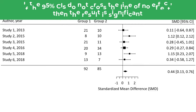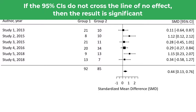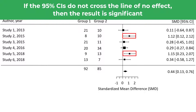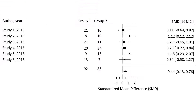However, if the 95% confidence intervals do not cross the line of no effect, as shown in studies 2 and 5, then the results of these individual studies are significant, so the p-value will be less than 0.05. This is also the case for the pooled result, since the diamond does not cross the line. The direction of the effect size relative to the line of no effect depends on how the effect sizes were calculated.